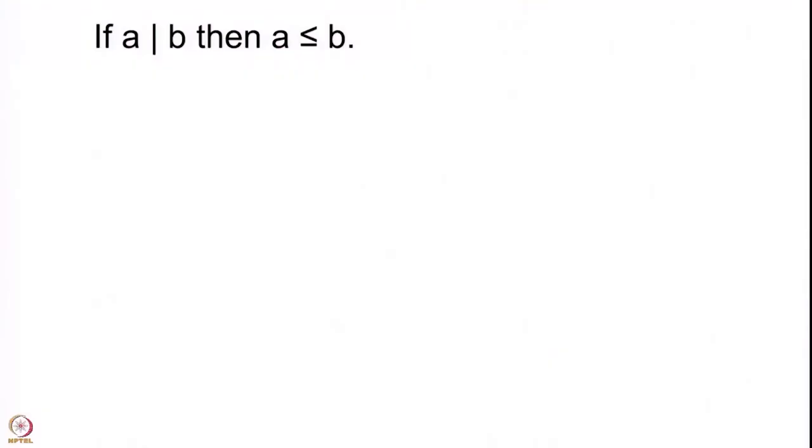We now go to the third property, which is very important and we will use it quite often. This says that if you have a natural number A dividing a natural number B, then A should be less than or equal to B. This symbol means either A is less than B or A is equal to B. Once again I will give you a minute to think about this proof.